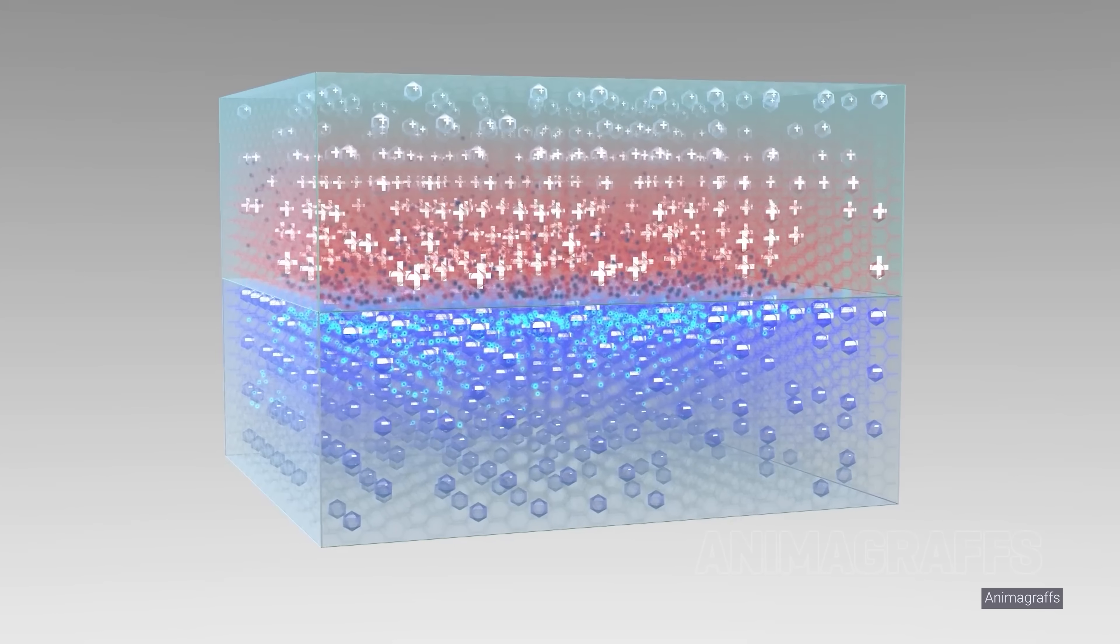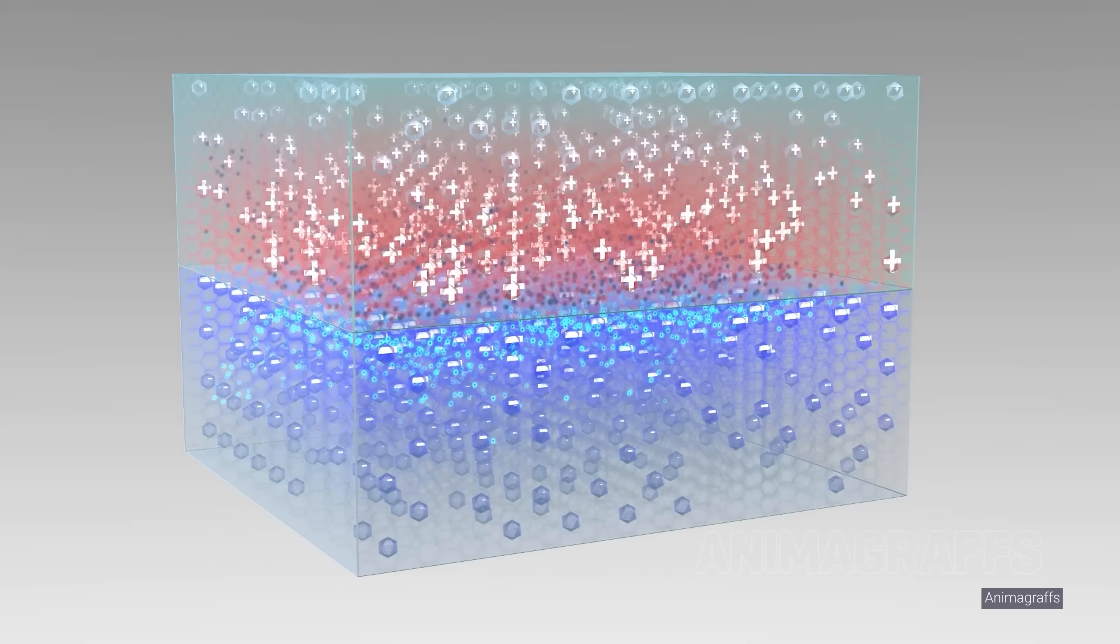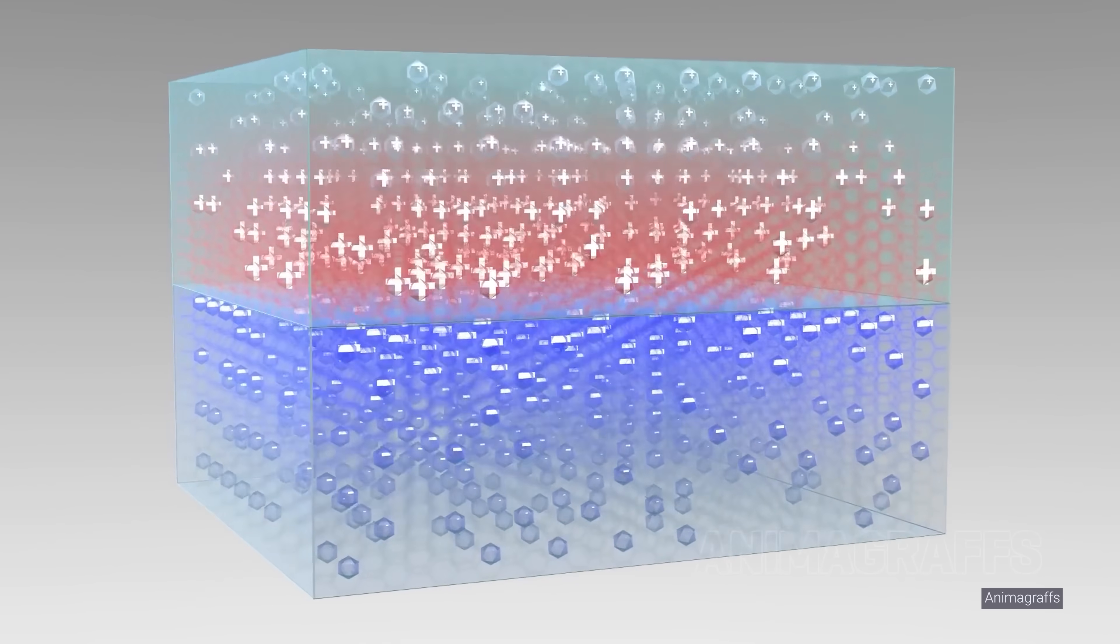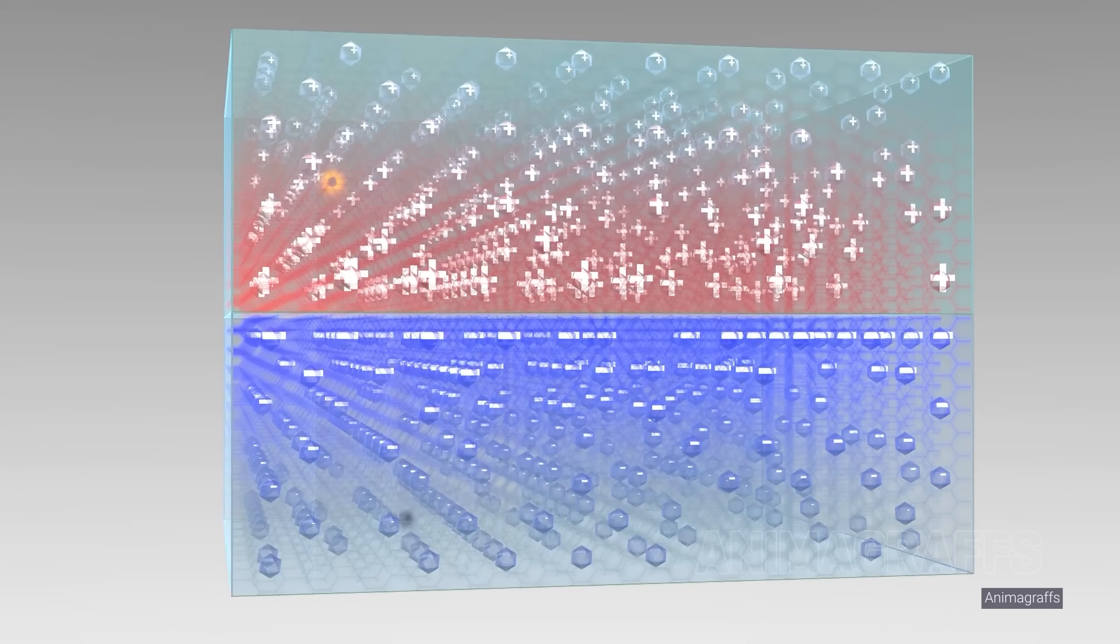When an N-type and P-type material are put in contact, free electrons from the N-type material and free holes from the P-type material move across the boundary and cancel each other out. The electrons fill in the holes. This uncovers the fixed positive and negative charges of the dopant ions, which creates a built-in electric field that stops more electrons and holes from moving across the boundary.